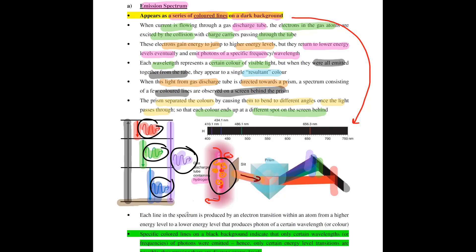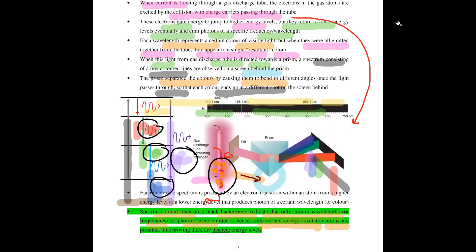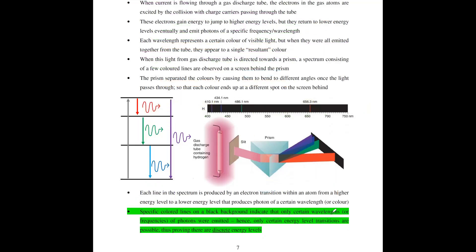Each line in the spectrum is produced by an electron transition from within your atom — from a higher energy level to a lower energy level — which produces a photon of a certain wavelength or color. The importance of this colored spectrum is that it tells you only certain wavelengths or frequencies of photons were emitted. Because you see only specific colors, meaning certain wavelengths, certain frequencies, and certain energies of photons, this tells you that there are only certain energy level transitions possible within your atom, thus proving that there are discrete energy levels of electrons.